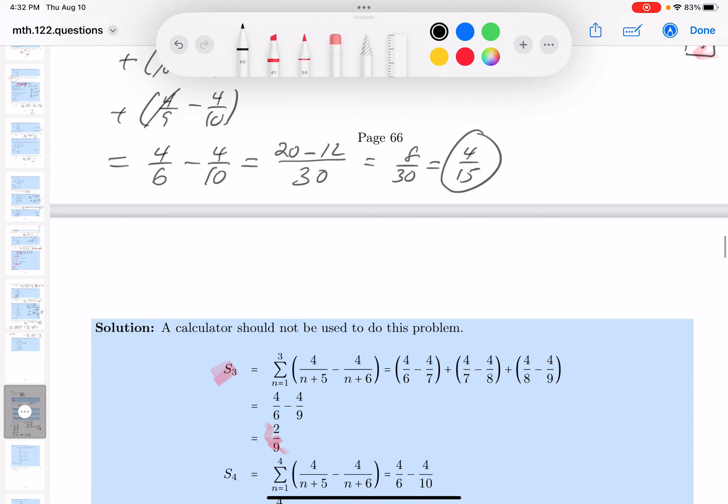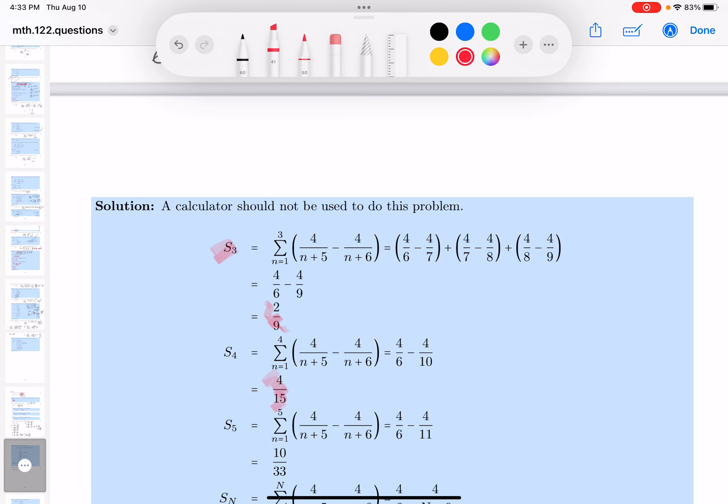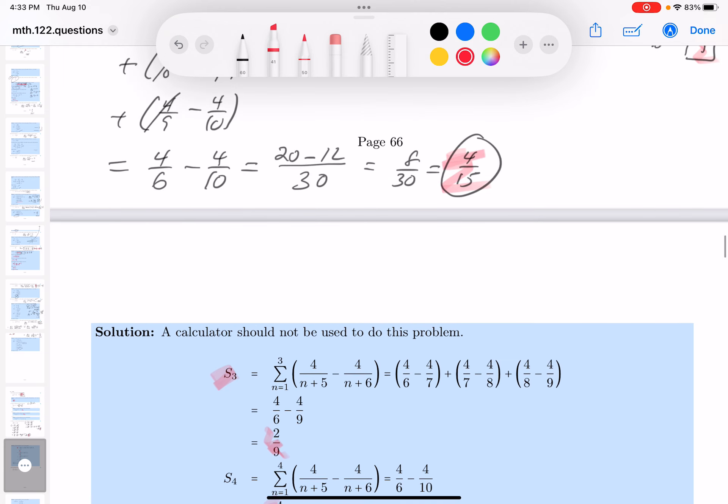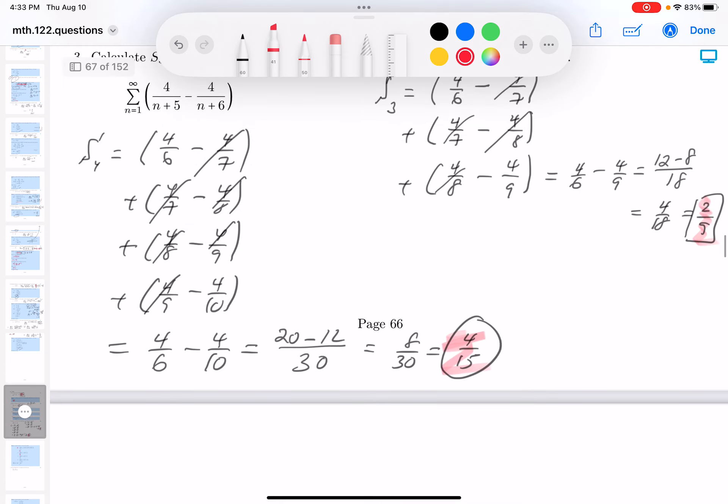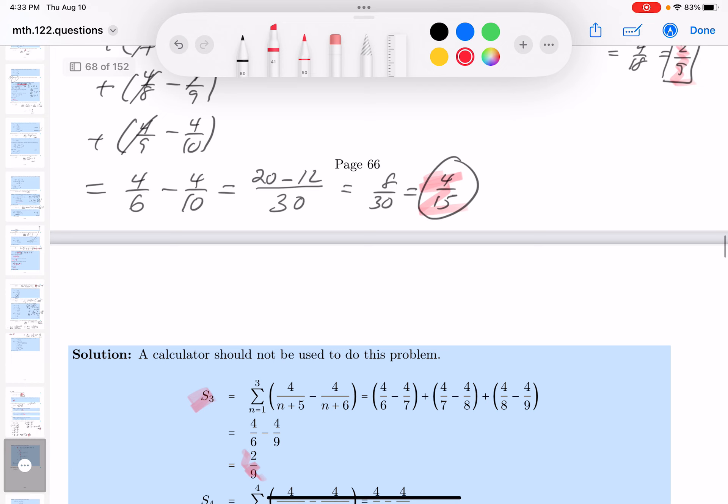Again, mistakes happen. You're going to learn from your mistakes, by the way. But hopefully you're seeing 4 fifteenths over here. All right? Now let me do... I guess I did S3, S4. I didn't do S5, did I? Okay.